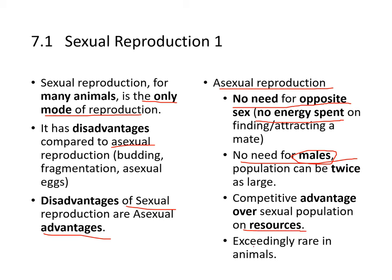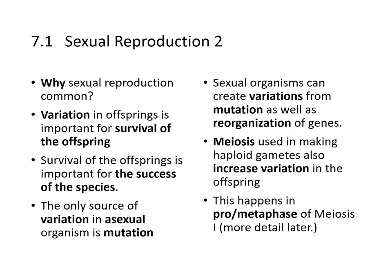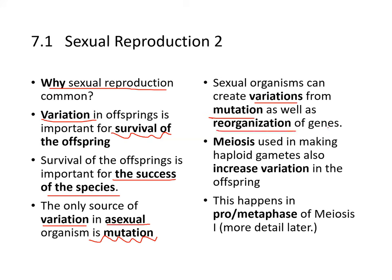Asexual reproduction is exceedingly rare in animals. So why is sexual reproduction so common? Because it produces variation in offspring, which is important for the survival of the offspring and the success of the species. The only source of variation in asexual organisms is mutation in the DNA, but sexual organisms can create variation from mutation as well as reorganization of genes.